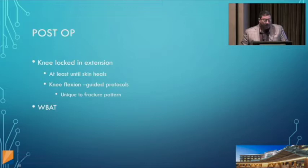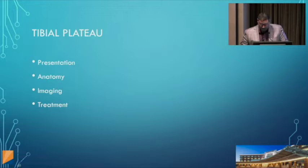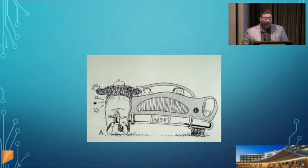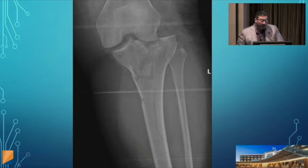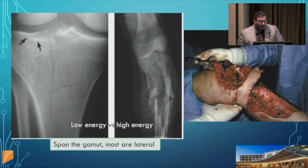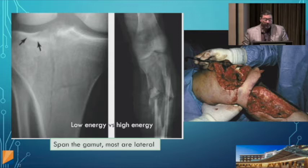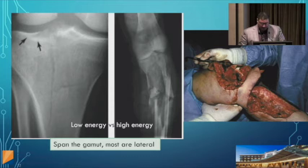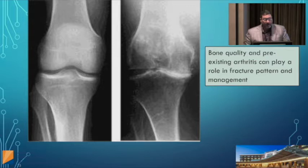Tibial plateau fractures in the trauma world are commonly produced from bumper injuries. Here's an example showing a depression of the joint with the knee subluxed and a fracture line extending downward. There's a difference between low-energy and high-energy injuries in terms of management — high energy must be treated more aggressively and in stages. If the patient has preexisting arthritis, that changes management, and some go on to primary knee replacement.